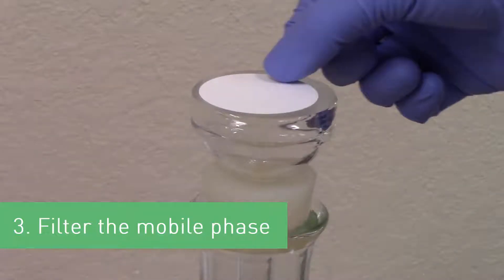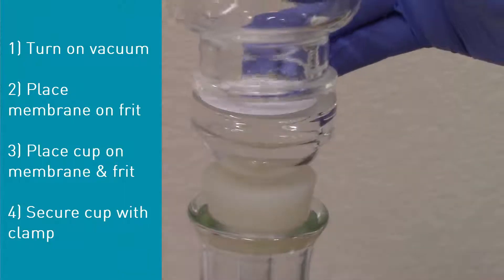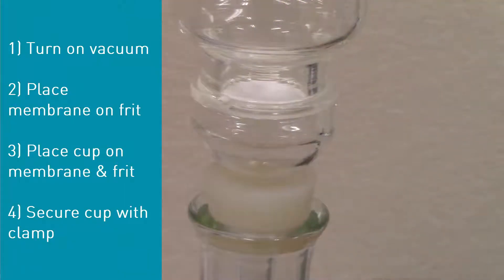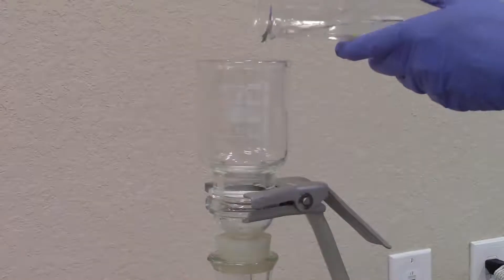Third, filter the mobile phase. Turn on the vacuum pump first to ensure that the filter membrane seals to the frit. Then place the cup on top and secure it with the clamp. Now you're ready to add the mobile phase solution to the filter cup.